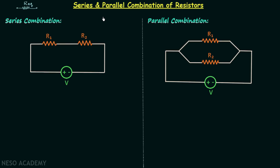We will understand in detail what series combination is and how to obtain the equivalent resistance. For this, I have taken a simple circuit with two resistors and one voltage source. The resistance of the first resistor is R1, and the resistance of the second resistor is R2.